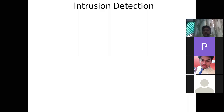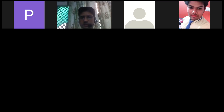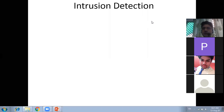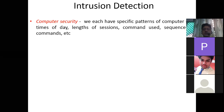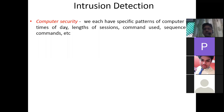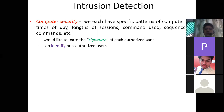They can detect each and everything with the help of your internet usage. If someone is using your internet at odd times, based on past experience or detected anomalies, they can predict that something unusual is happening — perhaps someone else is using your connection. In computer security, each user has a specific pattern of computer use: time of day, length of session, commands used. Learning algorithms learn the signature of each authorized user to identify non-authorized users.